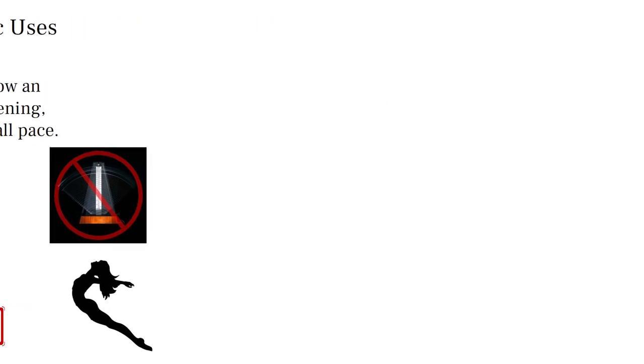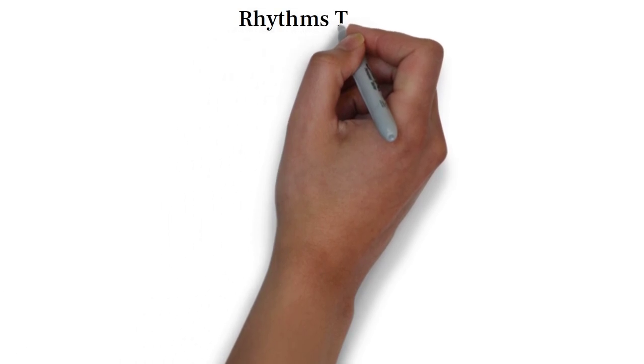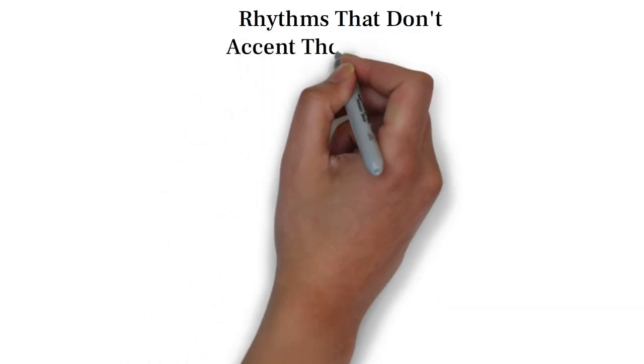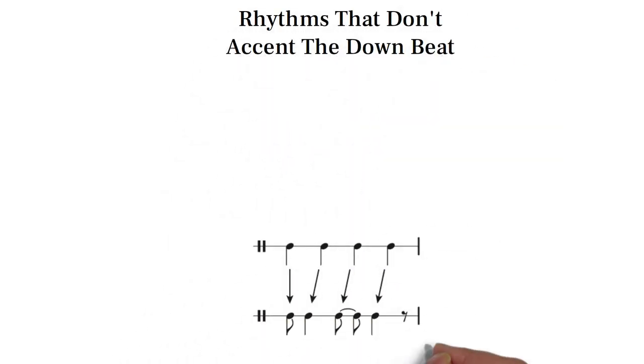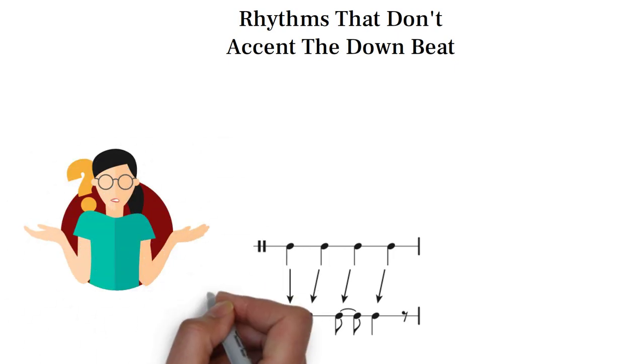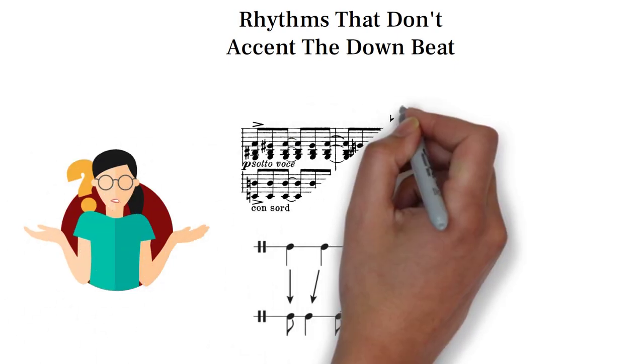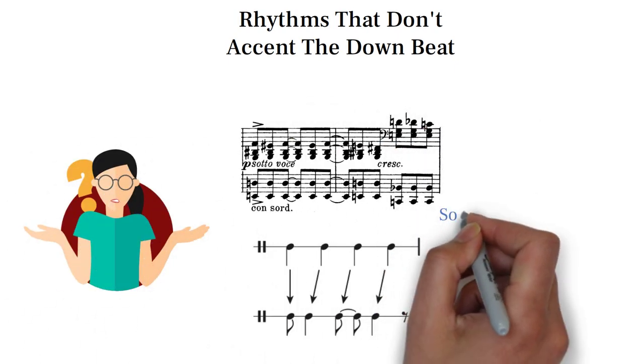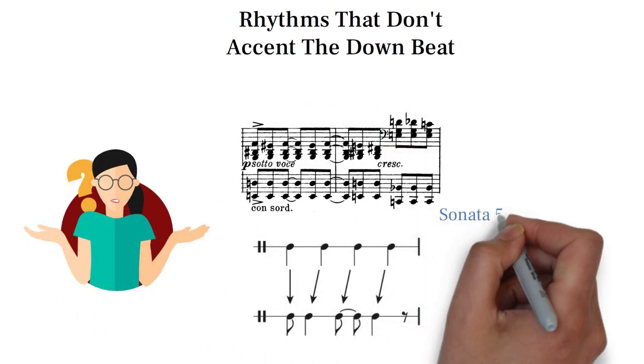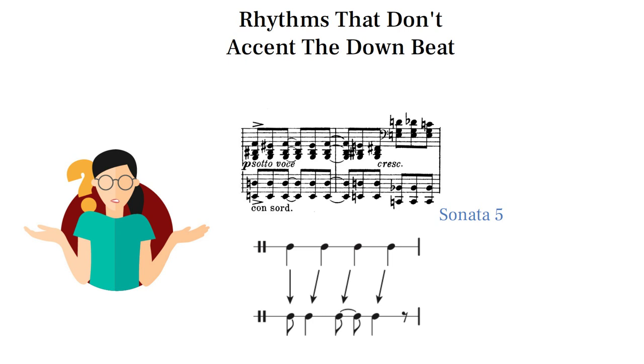Another factor is how he sometimes used rhythms that don't accentuate the strong beats. Without attacks on the downbeat, it makes the listener unsure of the pulse, which is just the sort of ambiguous feeling Scriabin goes for.